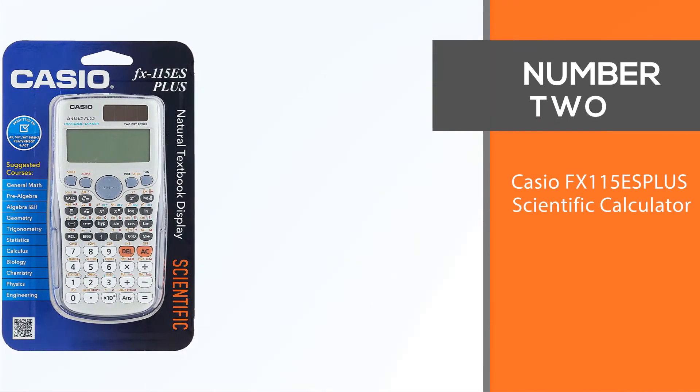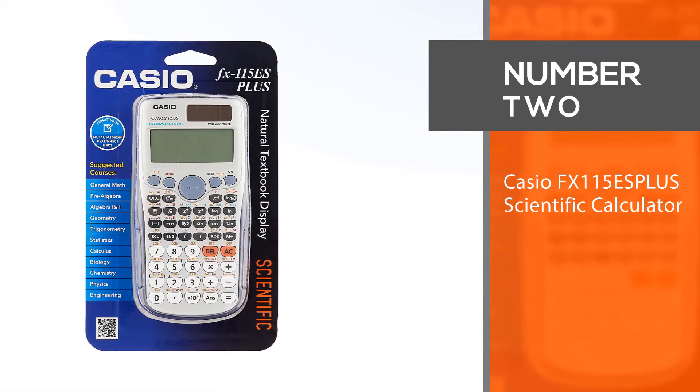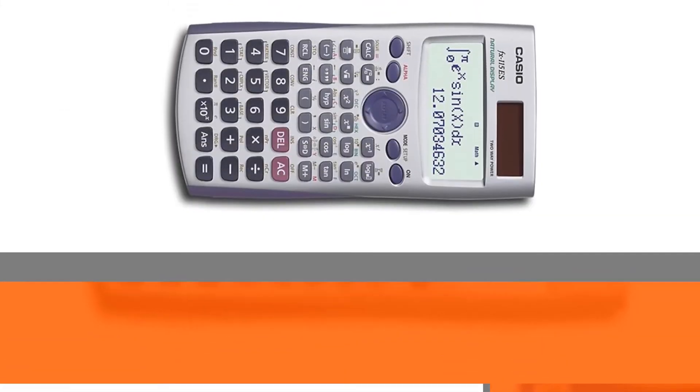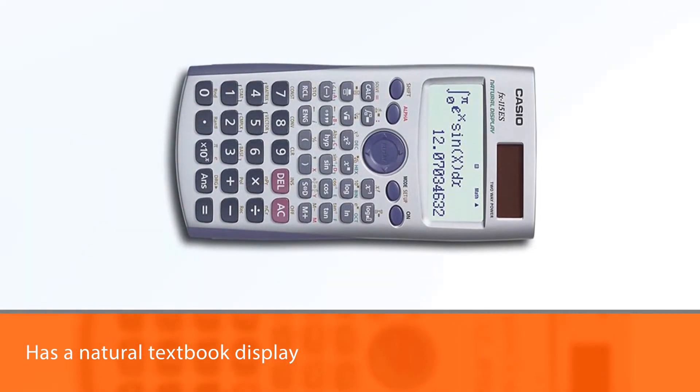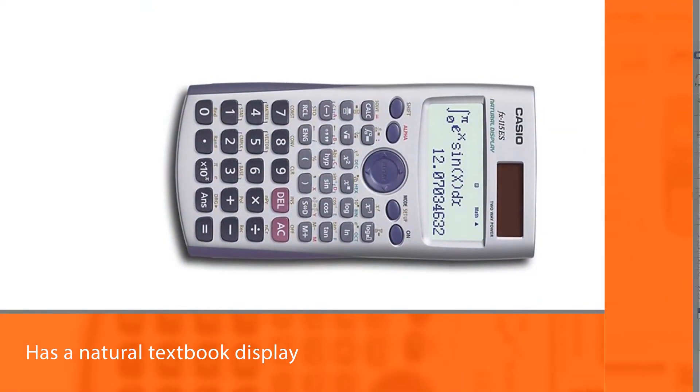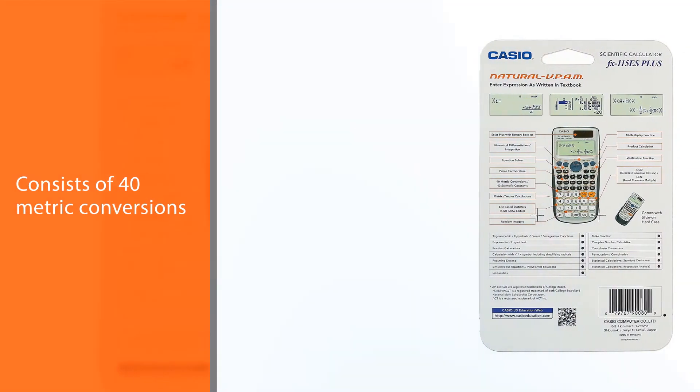Number two: Casio FX115ES plus scientific calculator. This too has a natural textbook display and has the features of step-by-step backtracking. It also consists of 40 metric conversions, metrics and vector calculations, etc.